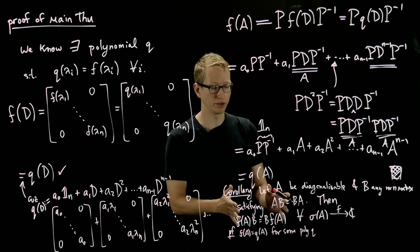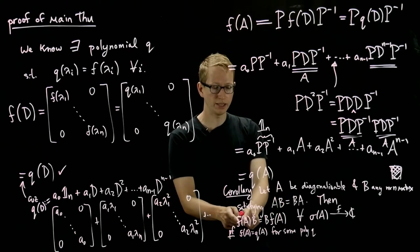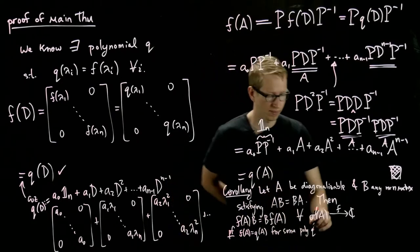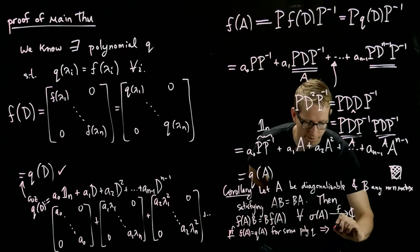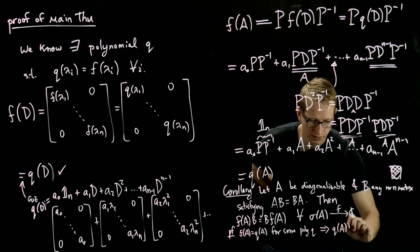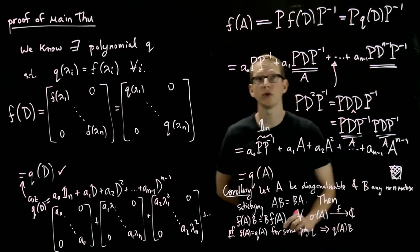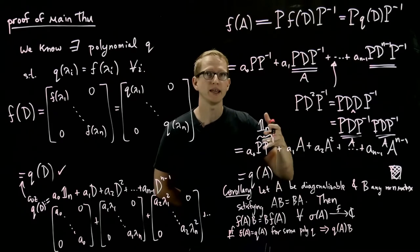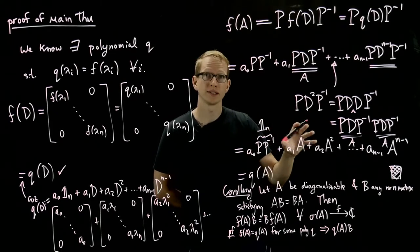And because it's a polynomial, if we replace this expression with q of A times B, so if we have q of A times B, this is a polynomial in A.